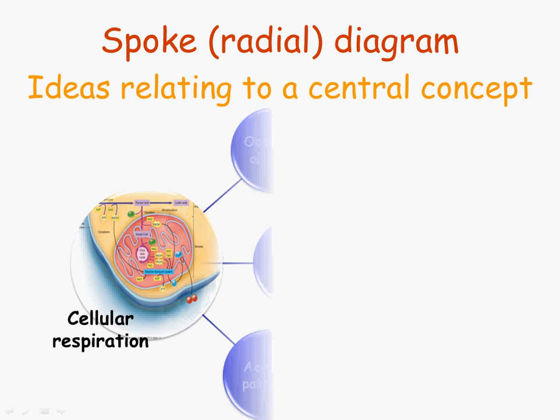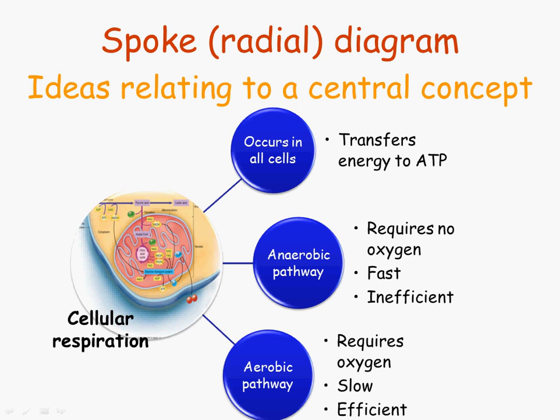Another style of concept map would be a spoke diagram, sometimes called a radial diagram. This is where you put the central idea in the center, then add spokes. Here I've only added three spokes, but you can imagine adding spokes going all the way around in 360 degrees. Each of those spokes could have their own spokes going out in a circle, and those could have another spoke — so you can add many layers of complexity depending on how much information you want in one diagram.